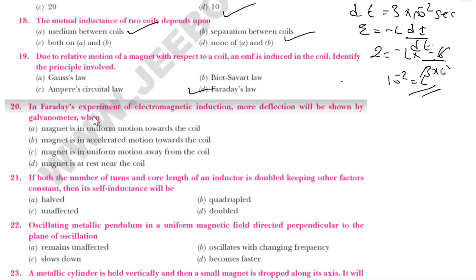In Faraday's experiment of electromagnetic induction, more deflection will be shown by the galvanometer when the magnet is in accelerated motion towards the coil. At that time only, there is more deflection shown in the galvanometer.